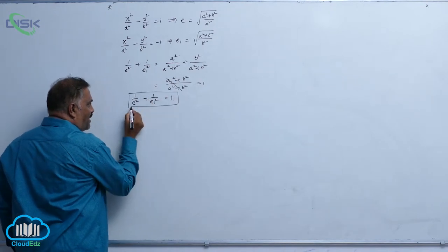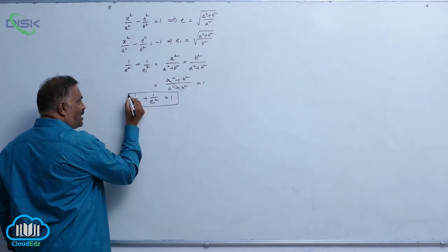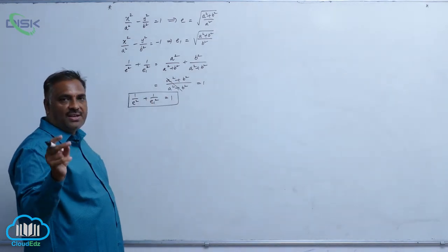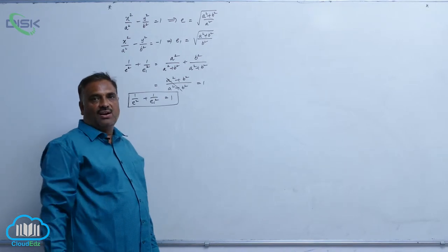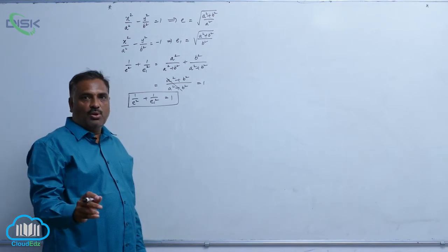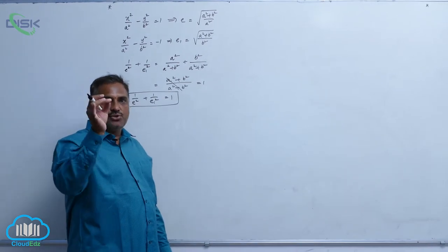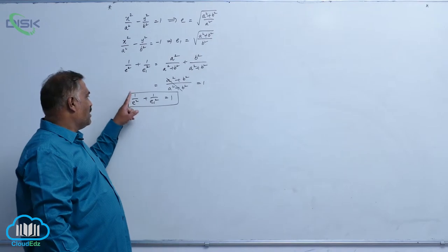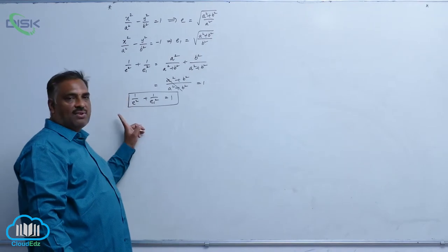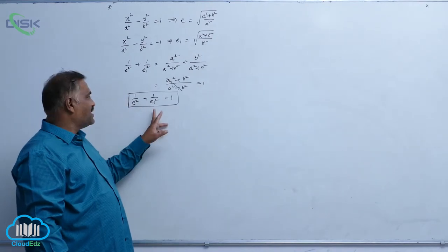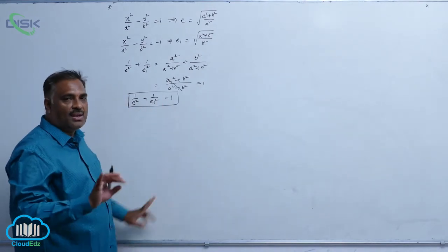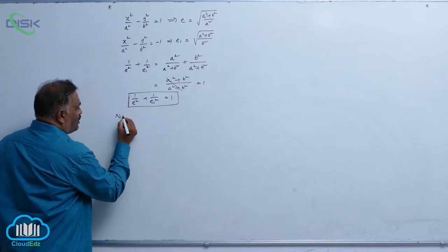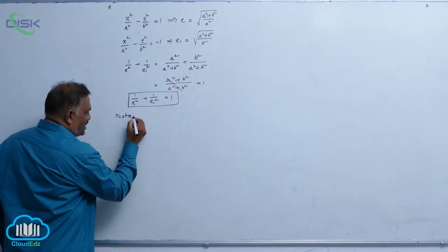This is a very important result: if e and e₁ are the eccentricities of a hyperbola and its conjugate hyperbola, we have 1/e² + 1/e₁² = 1. Now let us go to our notations.